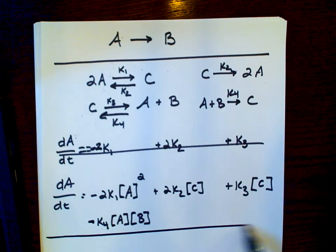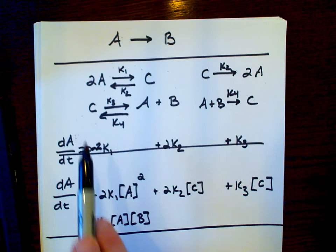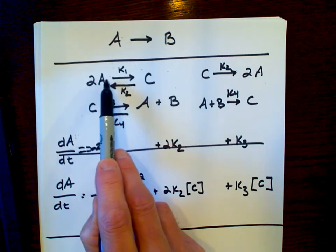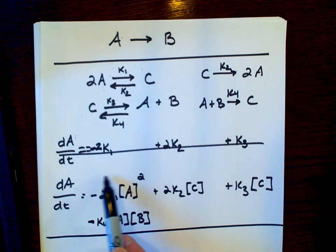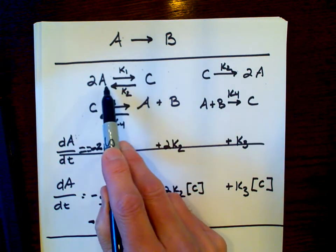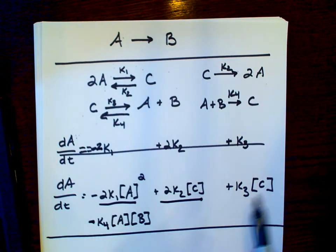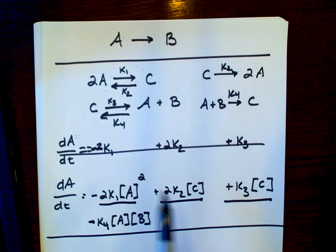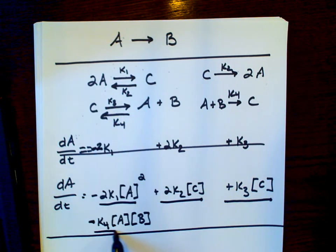So there would be four terms for the change in concentration of A with time. In step K1, we flow away from A, so we're losing A — that's our first term. In step K2, we're gaining A — that's our second term. In step K3, we're gaining A, so that's a positive K3 for our third term. And in step K4, we're losing A, so there's a negative term for that one.